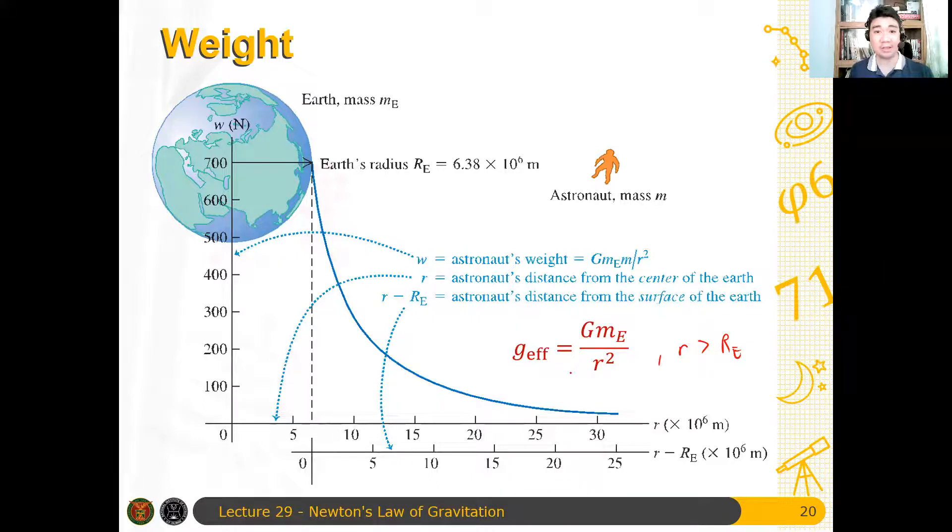Okay now, when you calculate the total weight or the total acceleration due to gravity, this should be with respect to the center, not to the radius of the Earth. So for example, if your height above the surface of the Earth is h,